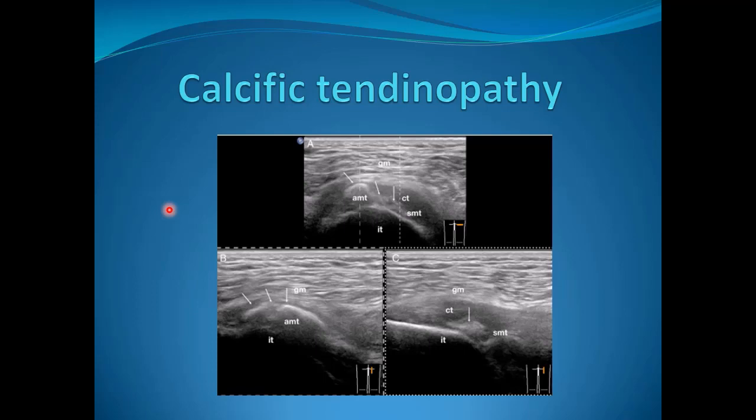Calcific tendinopathy is a very common pathology, sometimes noted after post-traumatic injuries, particularly in athletes, or in cases of calcium deposition in the tendon in older patients. We can see a specific tendinopathy particularly in the region of the gluteus medius tendon.